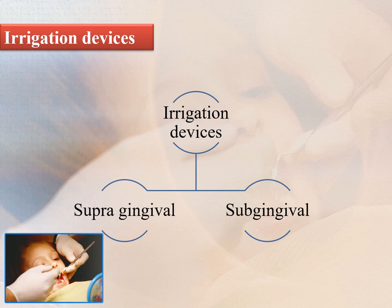Irrigation devices are classified into supragingival and subgingival irrigation. Irrigation with a standard jet tip is called supragingival irrigation, generally used for full-mouth irrigation. Irrigation with a soft site-specific tip is called subgingival irrigation, generally used for localized irrigation of a specific site such as a deep pocket, implant, or crowns and bridges.